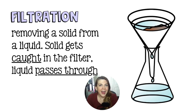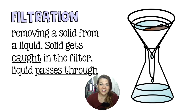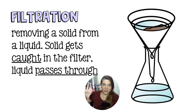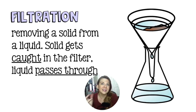You would use filtration anytime you have a solid mixed in with a liquid — for example, sand and water, or coffee grounds and water. You line a funnel with filter paper, similar to a coffee filter, though the ones used in chemistry are usually thicker. You pour your mixture into the funnel; the filter paper catches the solid while the liquid drips through. This process is usually pretty quick.